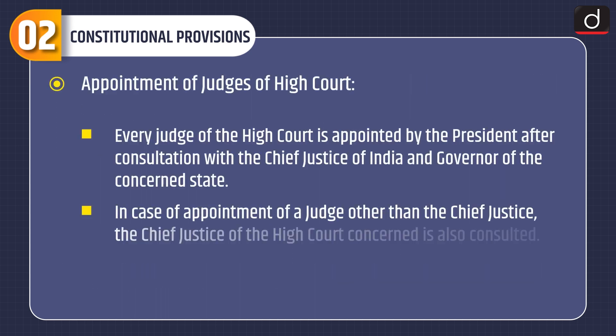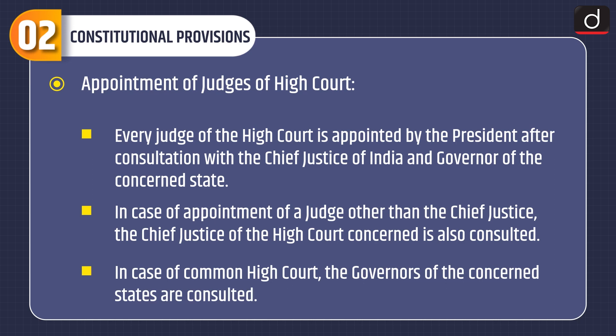Every judge of the High Court is appointed by the President after consultation with the Chief Justice of India and the Governor of the concerned state. In case of appointment of a judge other than the Chief Justice, the Chief Justice of the High Court concerned is also consulted. In case of a common High Court, the Governors of the concerned states are consulted.